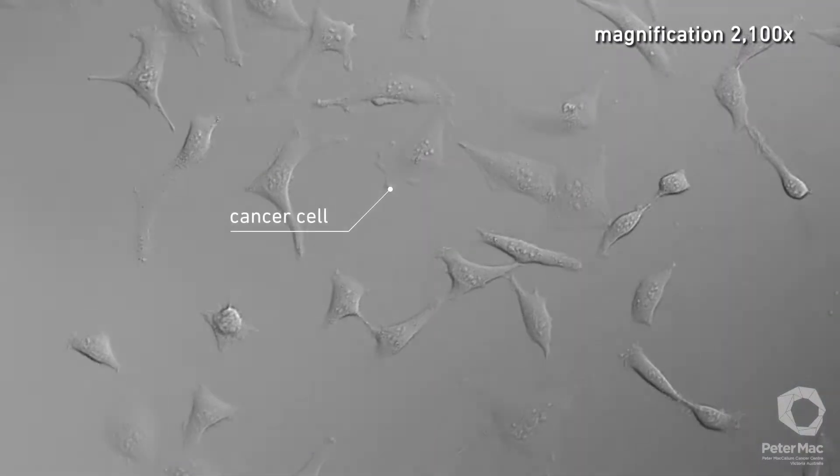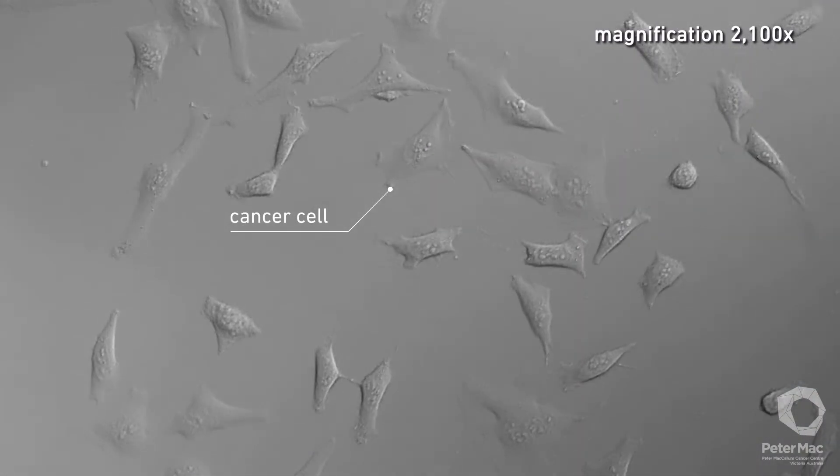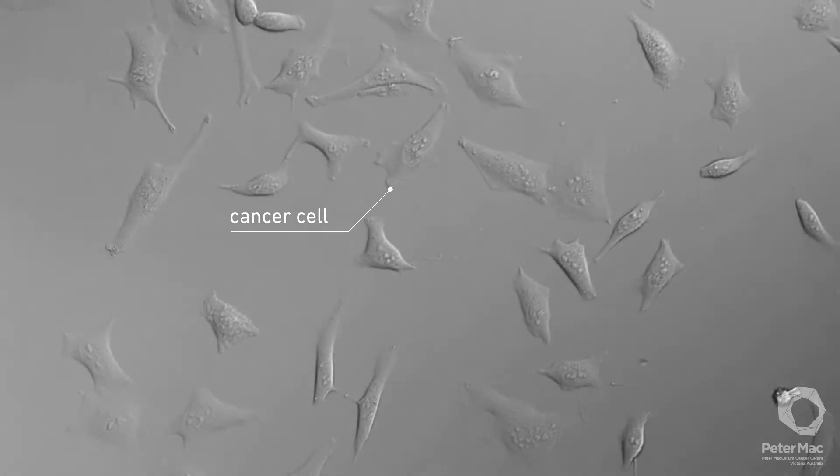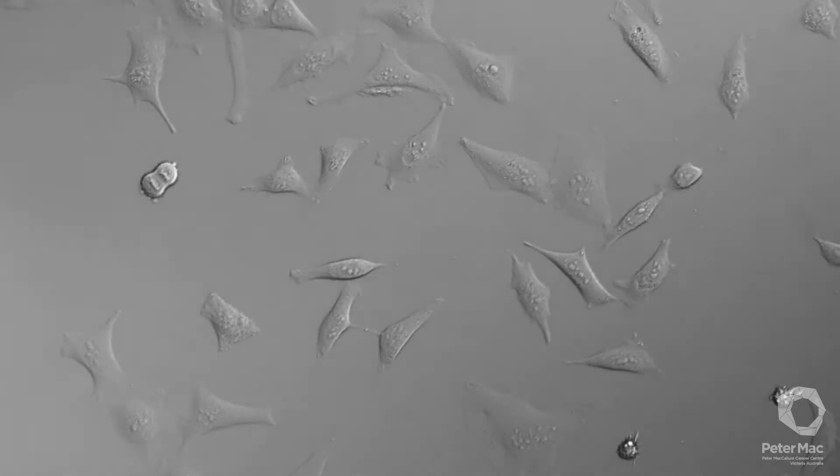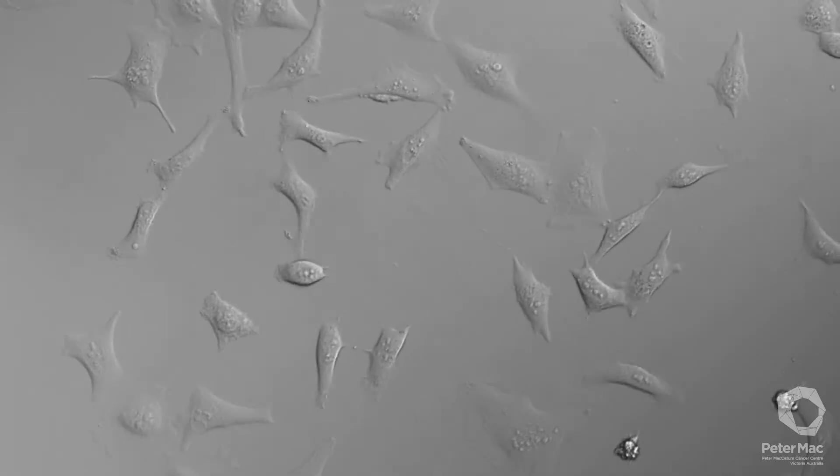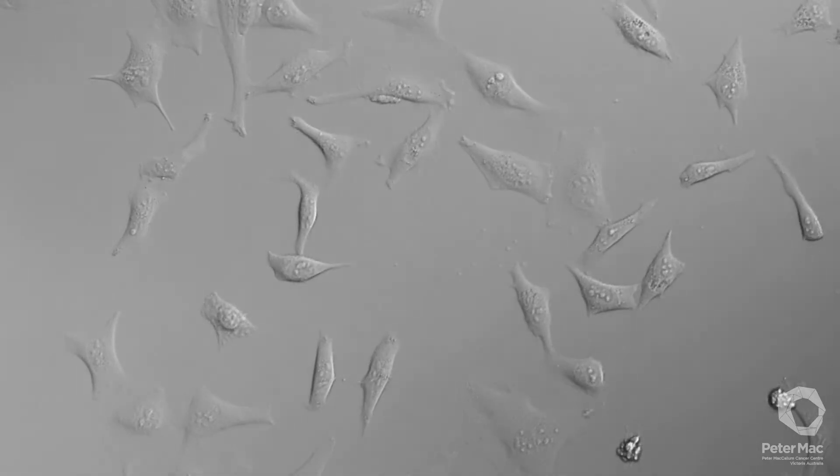Now we can see some cancer cells through a microscope. Cancer cells have changes in their DNA which make them multiply out of control. These changes make cancer cells different than normal cells.